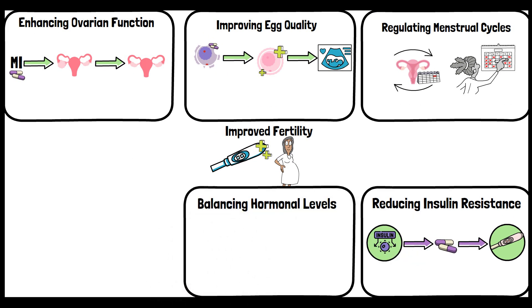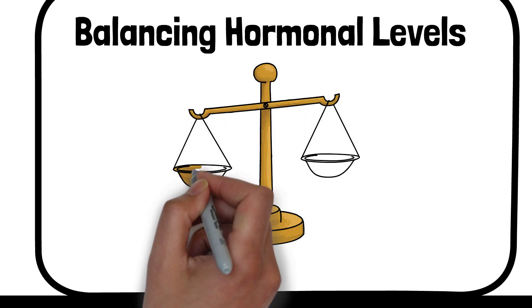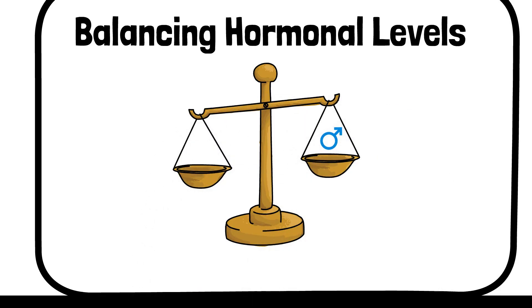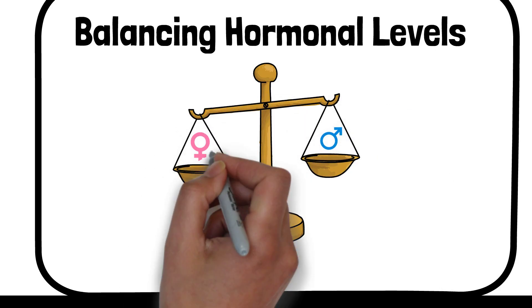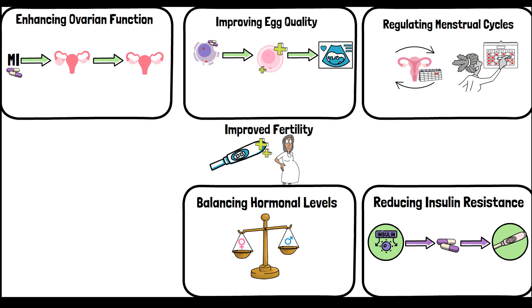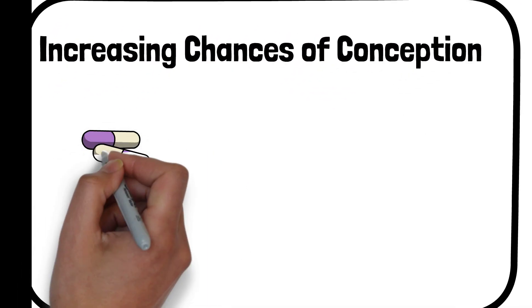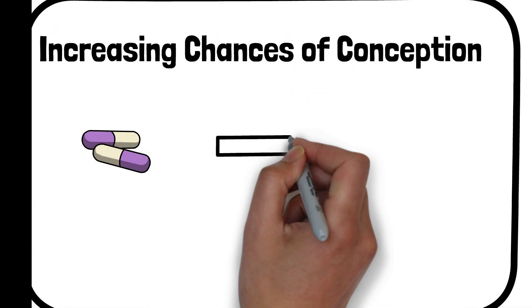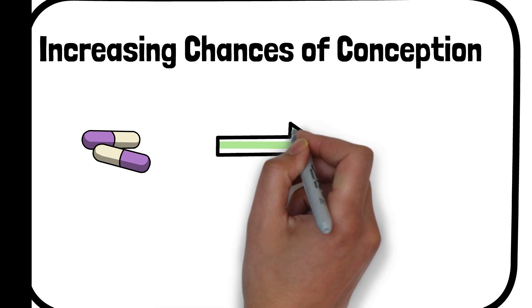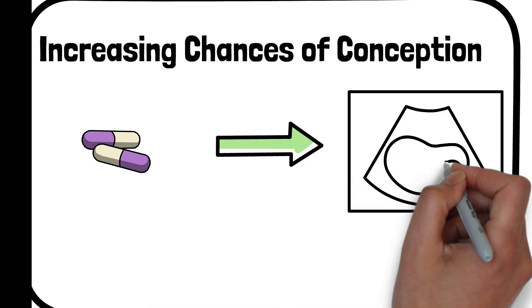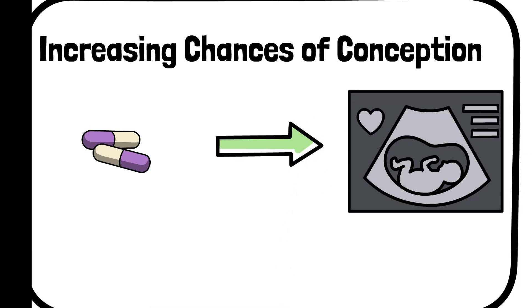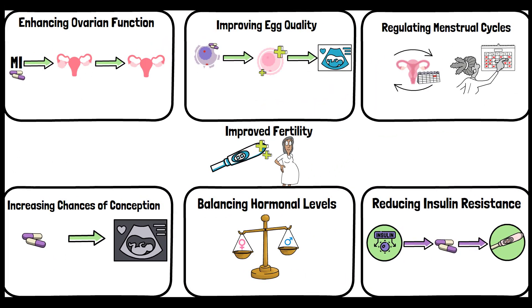Hormonal imbalances, particularly of insulin and androgens, can negatively impact fertility. Inositol helps in balancing these hormones, creating a more favorable environment for conception. For women facing fertility challenges, especially due to PCOS, inositol supplementation can increase the likelihood of conception, either naturally or in combination with fertility treatments.